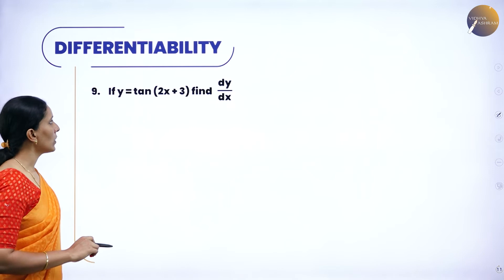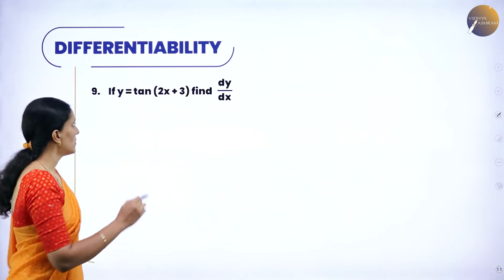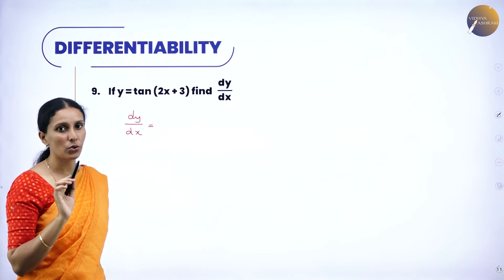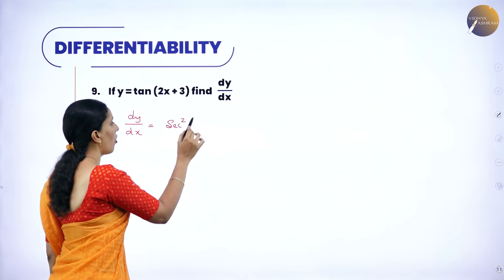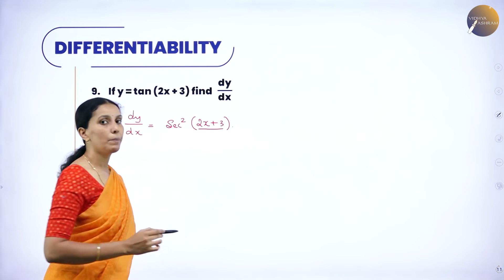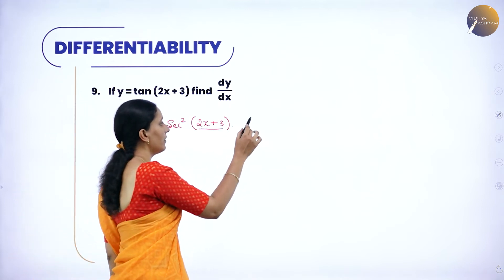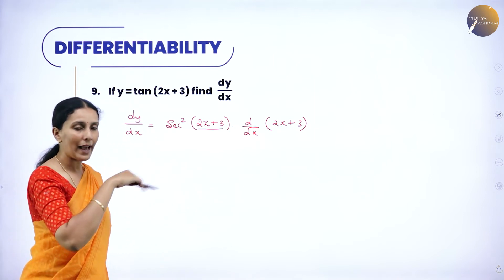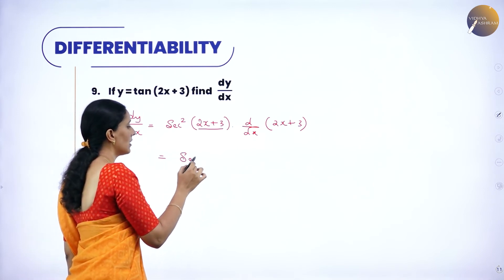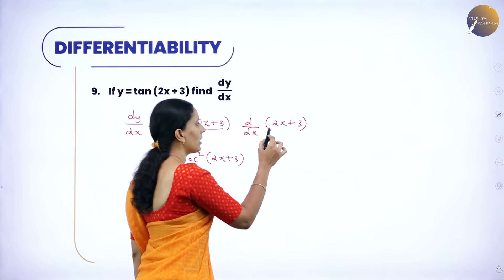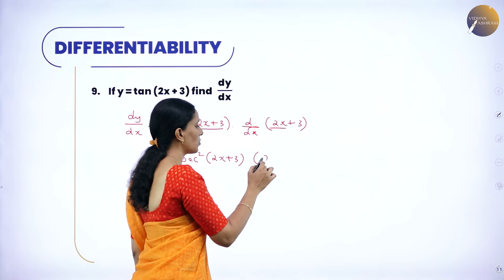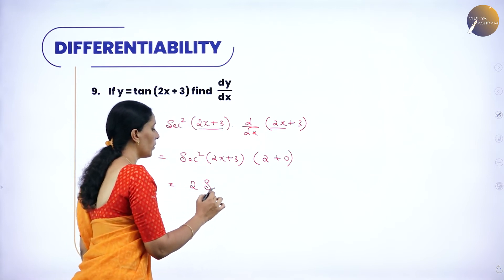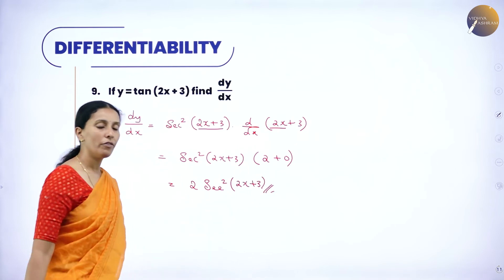y = tan(2x + 3), find dy/dx. The derivative of tan is sec². So dy/dx = sec²(2x + 3). Now differentiate the polynomial inside using the chain rule: d/dx of (2x + 3) — derivative of 2x is 2, derivative of 3 is 0. So the answer is 2·sec²(2x + 3). This is the derivative of the given function.